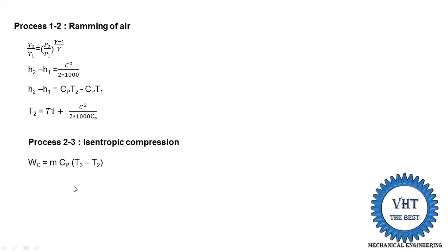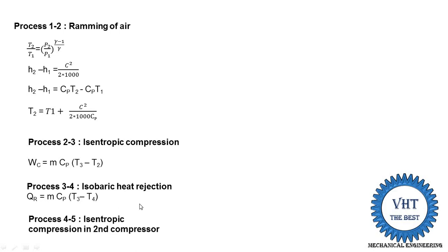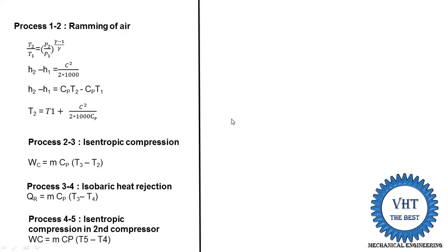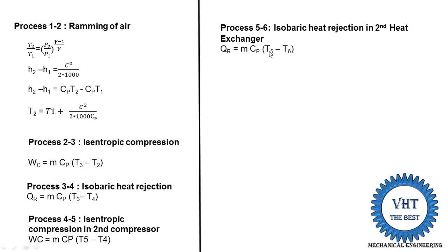For process three to four — isobaric heat rejection in the first heat exchanger — the heat rejected is QR = m·Cp·(T3 − T4). For process four to five — isentropic compression in the second compressor — Wc = m·Cp·(T5 − T4), but this is not included in the COP equation because the second compressor is freely run by the turbine. For process five to six — isobaric heat rejection in the second heat exchanger — QR = m·Cp·(T5 − T6).